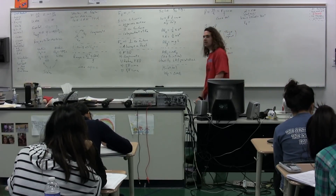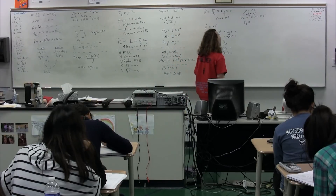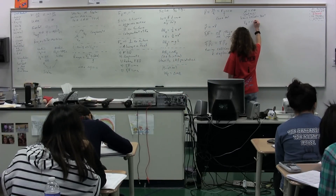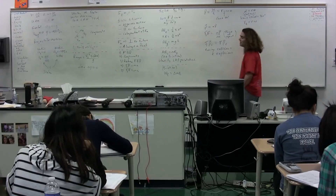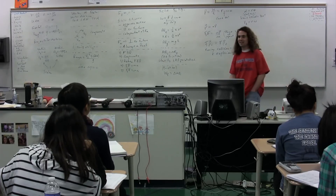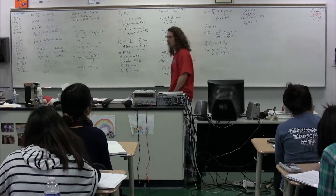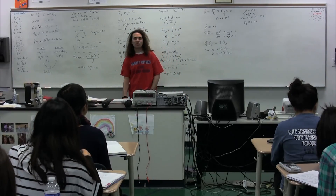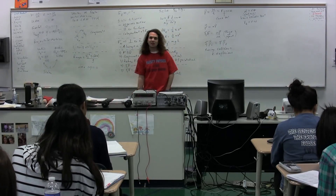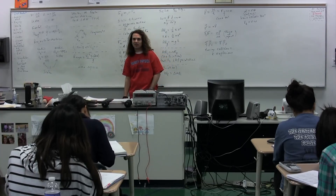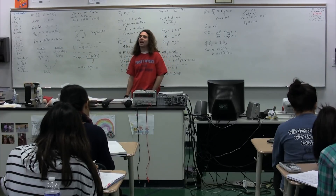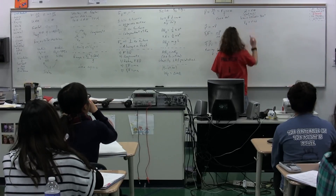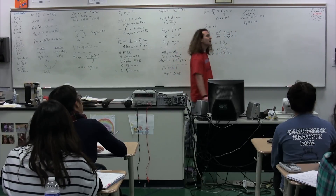The equation for tangential velocity, Laura? V sub T equals R times omega. It is not called W, but it looks very much like a W. Stecker, what is the W called? Omega. What does omega stand for, Jessica? Angular velocity. So we have tangential velocity equals R times angular velocity. Note, you still have to use radians.